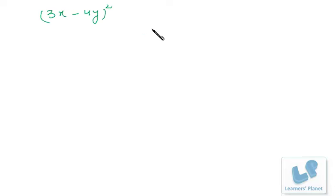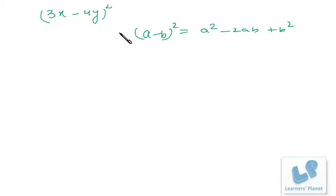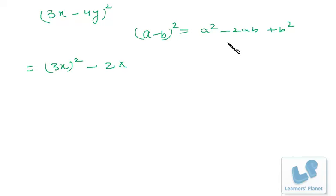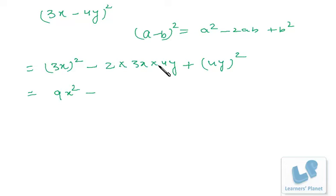Similarly, for (3x - 4y)², we use the identity (a-b)² = a² - 2ab + b², with a = 3x and b = 4y. Expanding: (3x)² - 2(3x)(4y) + (4y)² = 9x² - 24xy + 16y². That is the expansion of this expression.